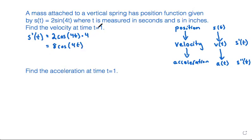To find the velocity at time t = 1, we need to plug in 1 into our function. So s'(1) = 8cos(4×1), which is 8cos(4).